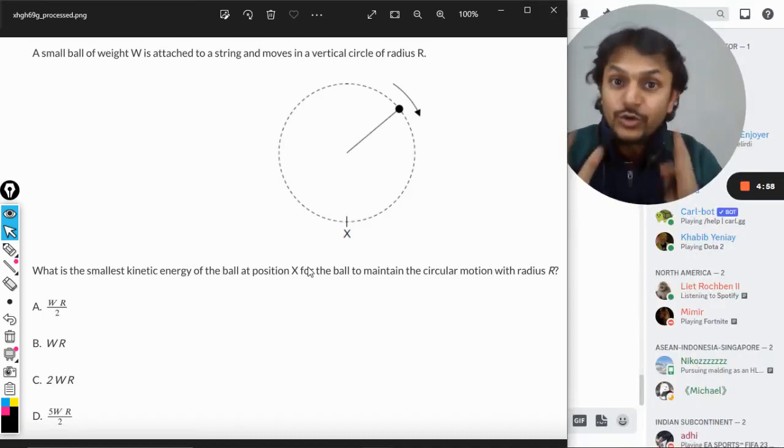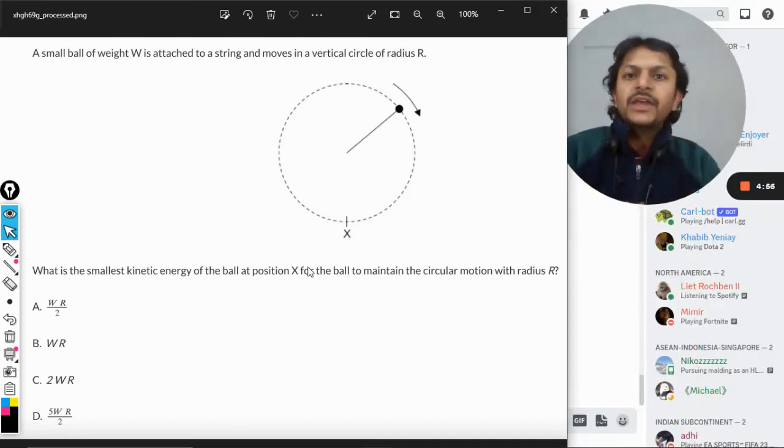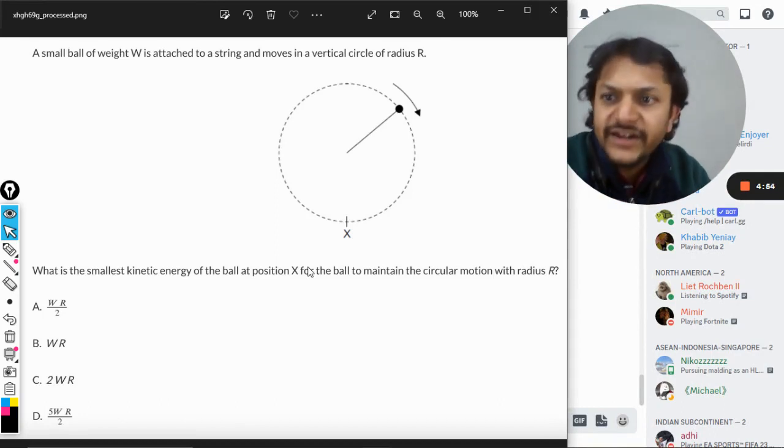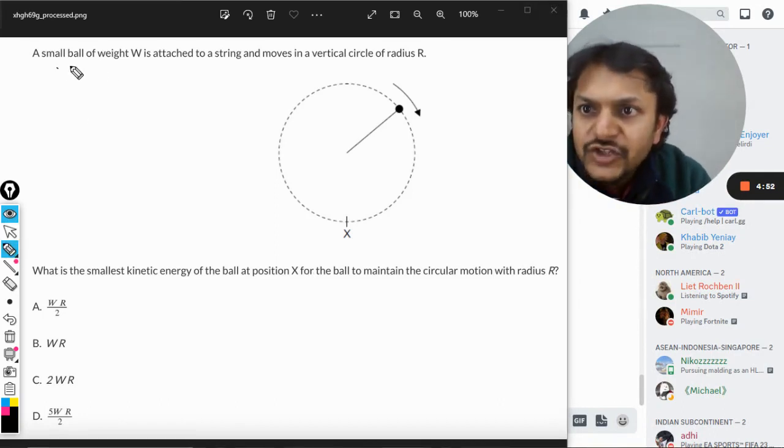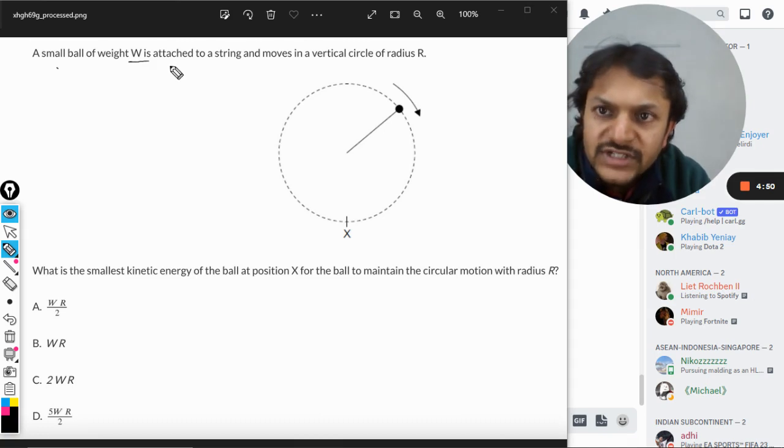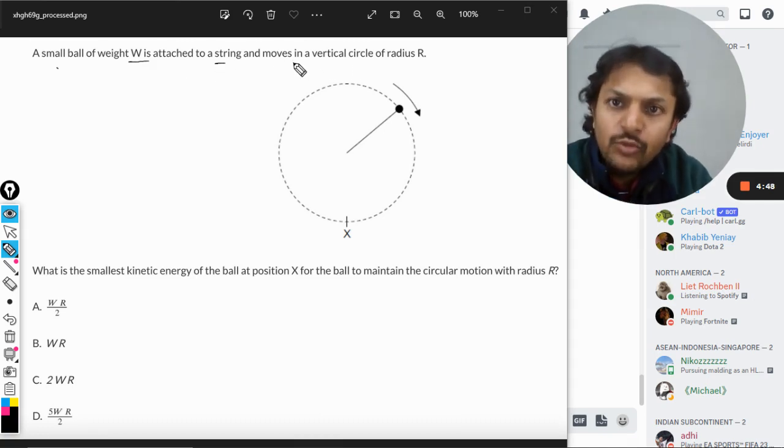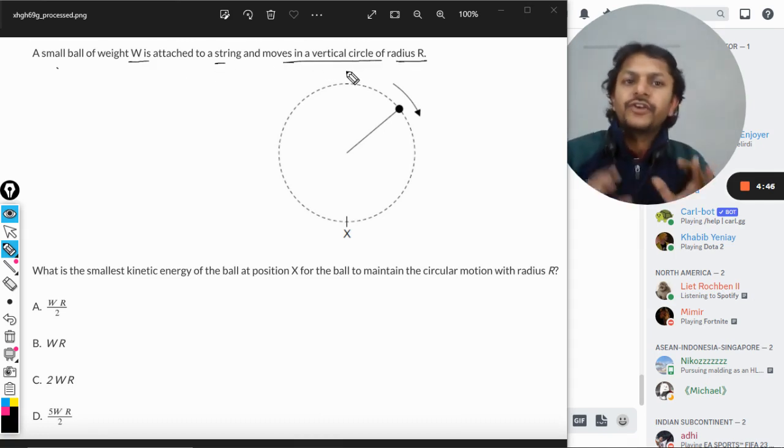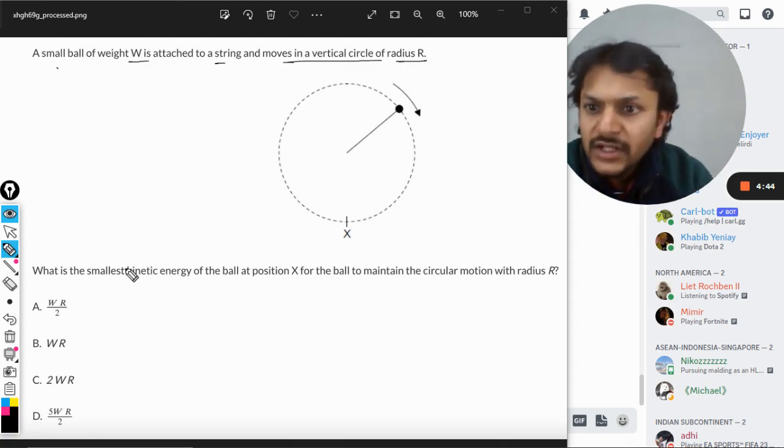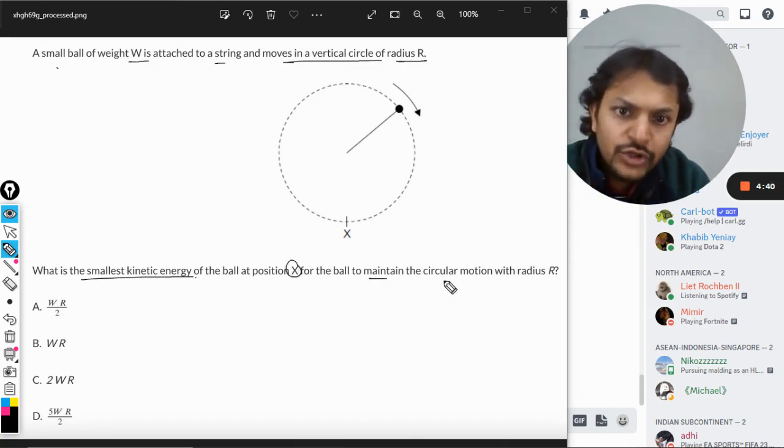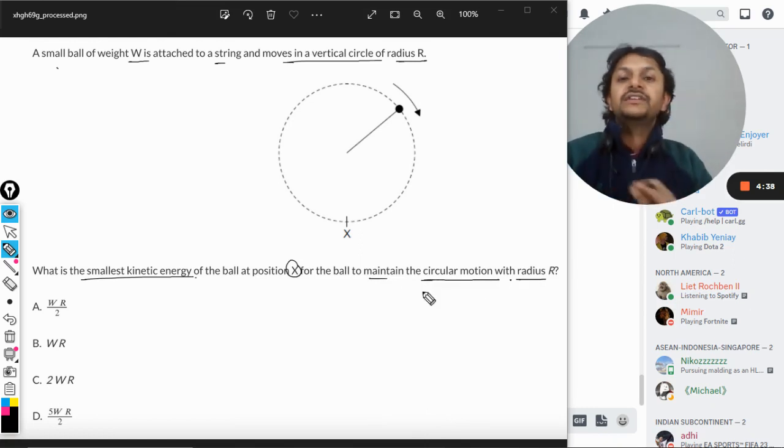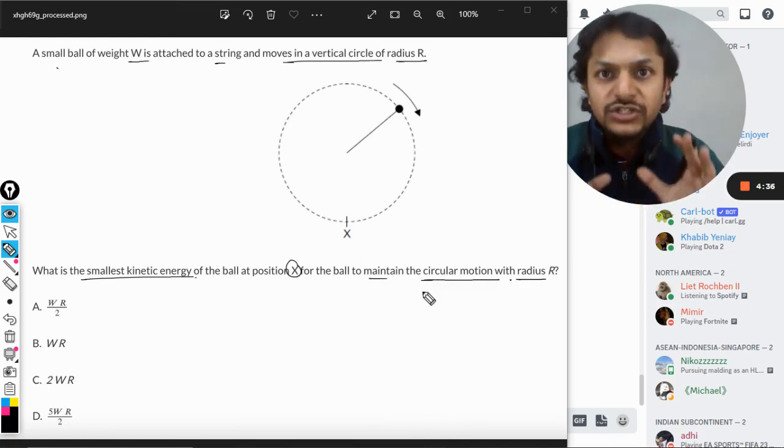Okay my dear students, this is a question that I got on this card. Let us read this question. A small ball of weight W is attached to a string and moves in a vertical circle of radius capital R. What is the smallest kinetic energy of the ball at position X for the ball to maintain the circular motion with radius R?